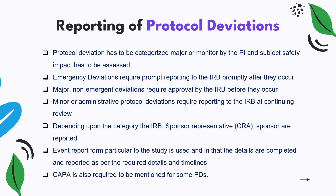Whatever deviations occur, there must be a corrective and preventive action — commonly referred to as CAPA. What corrective actions were taken and what preventive actions were taken to avoid future deviations also need to be mentioned in some protocol deviation reports.